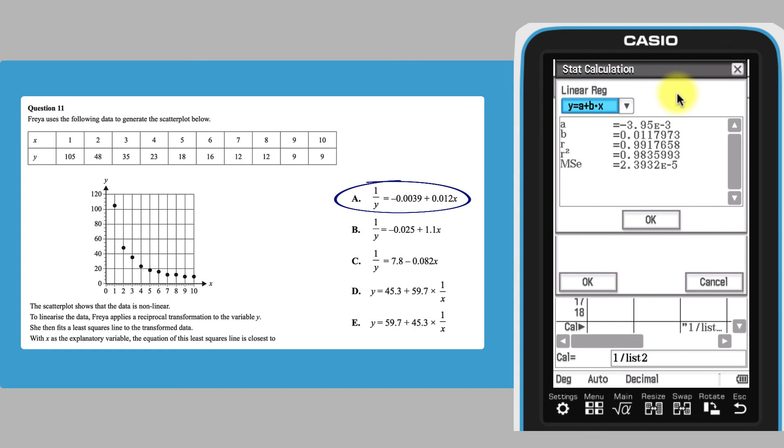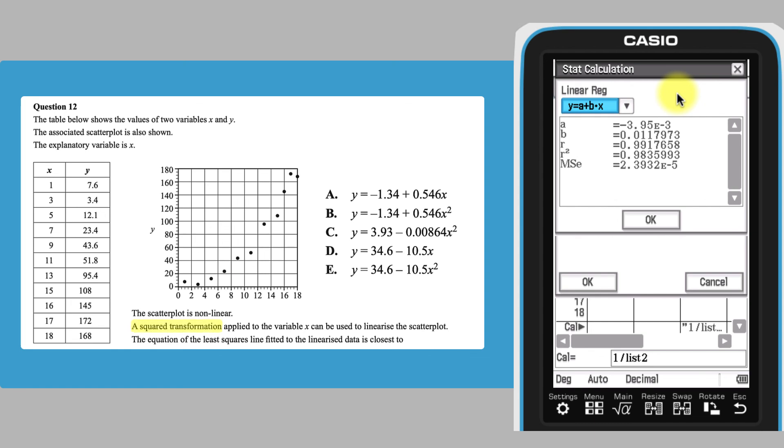Try using a similar method to answer the following question. This calls for a squared transformation on x prior to the determination of a least squares regression line. The correct answer is option b.